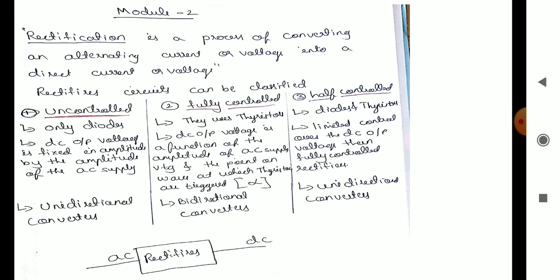Module 2: Phase Controlled Converters. Here we will be studying control techniques, single phase half wave and full wave controlled rectifiers with R load and RL load, along with the freewheeling diode. The second part of module 2 is choppers, where we study the classification, basic operation, step down, step up, and both up-and-down choppers.